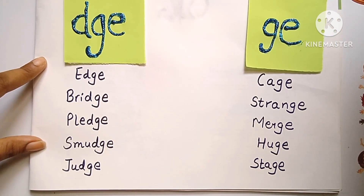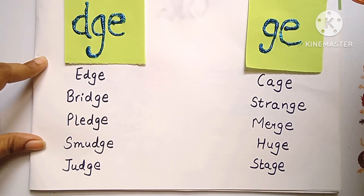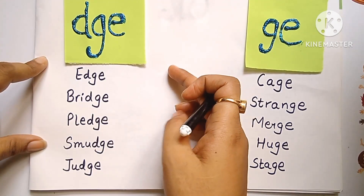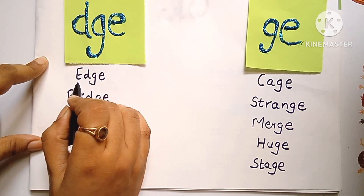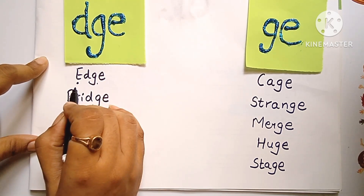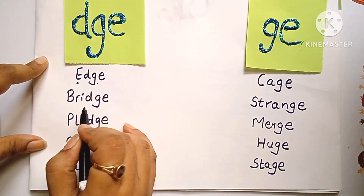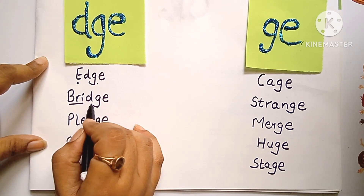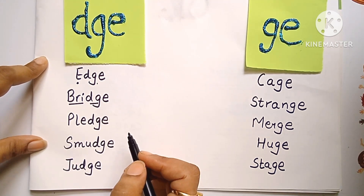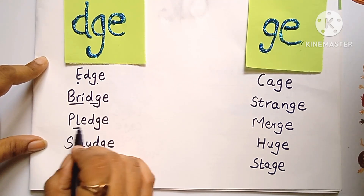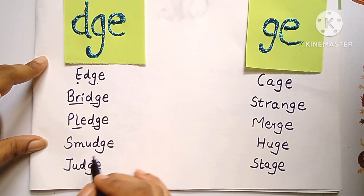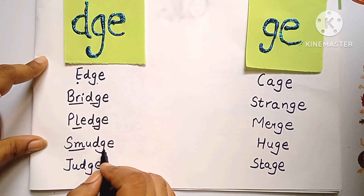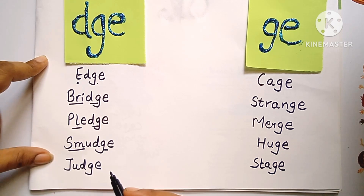Now, let us read some words with these trigraphs and digraphs. First of all, the trigraph — read it with me. Smudge, smudge.